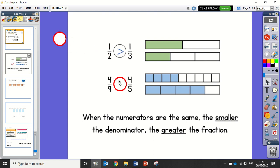Let's see if it's right for this one. 4 ninths and 4 fifths. We've got the same numerator. And 5 is smaller than 9, so 4 fifths should be bigger. And it is.